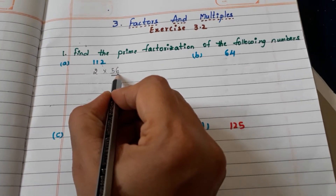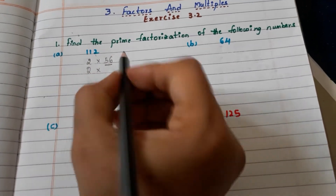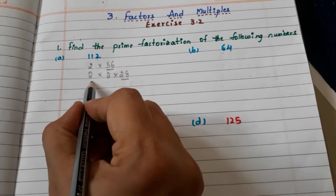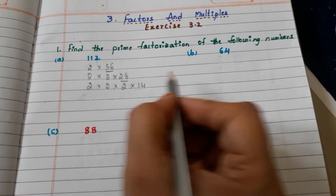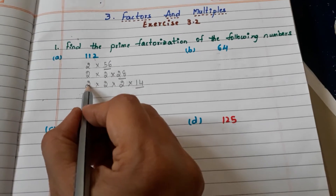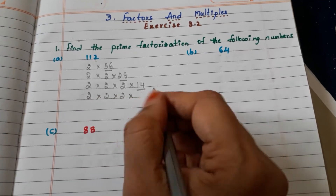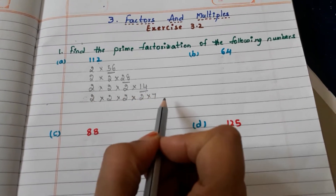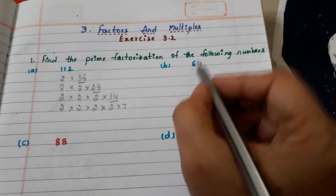Now we can write 56 as 2 into 28. Simply taking this 2 down, and 56 as 2 into 28. Now 28 — we can write 28 as 2 into 14. Now 14, how we can write? 2 into 7. So we have 2 into 2 into 2 into 2 into 7. See here, we have all prime numbers, so this is prime factorization.